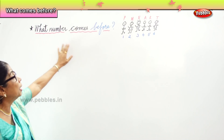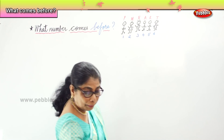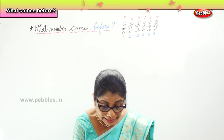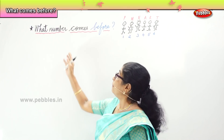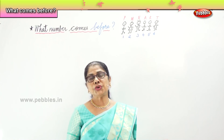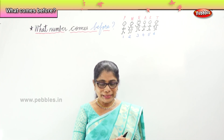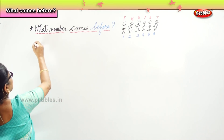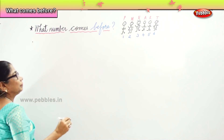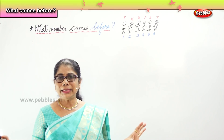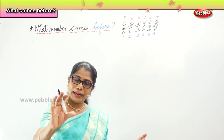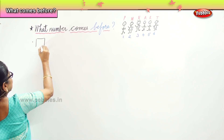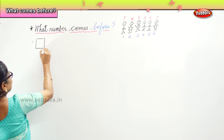What number comes before? Now I will give you some numbers and you write what number comes before. Having done numerals 1 to 100, the number coming before should be easy for you. I just put the blank and you fill in the number that comes before. I do not know what number comes here.